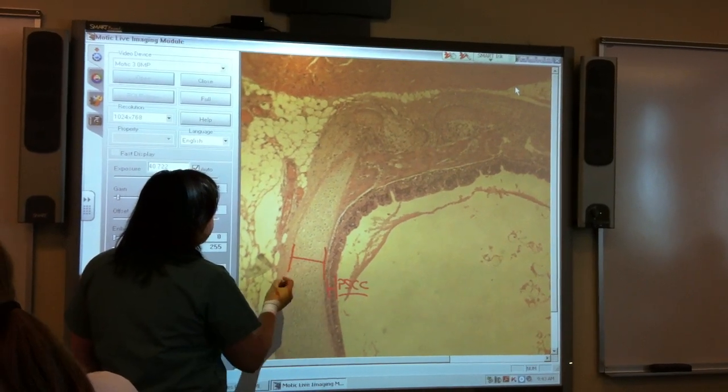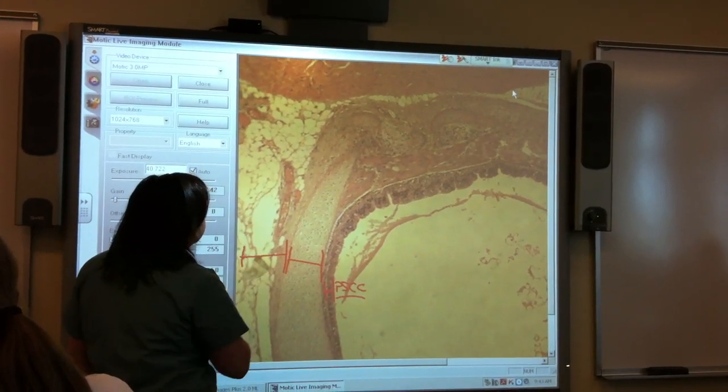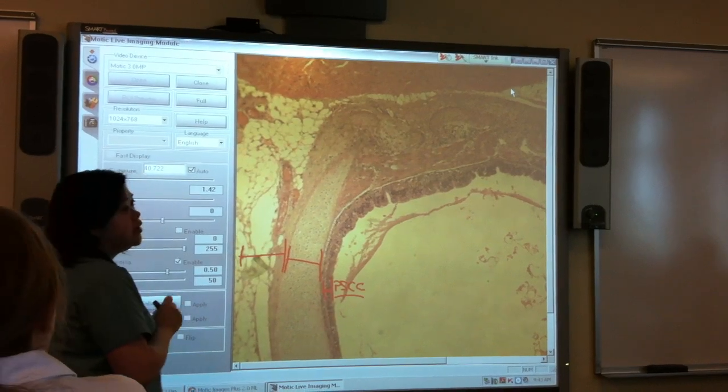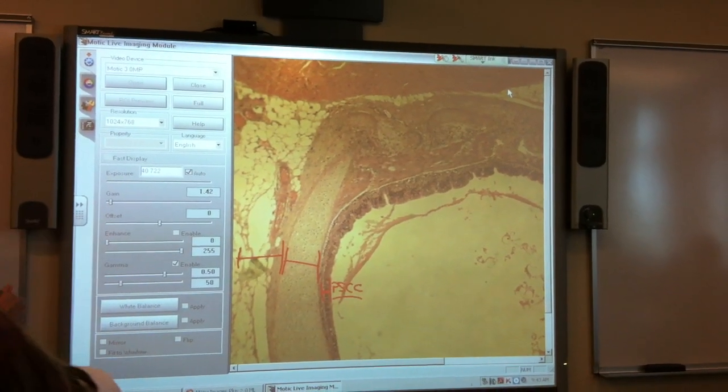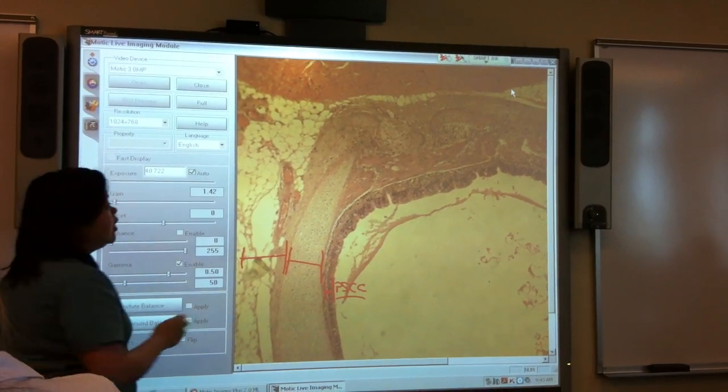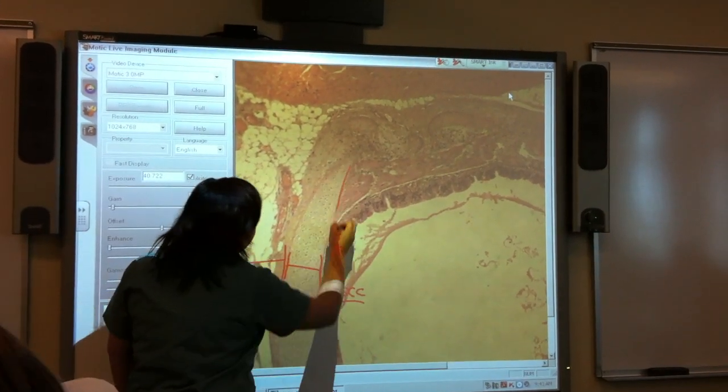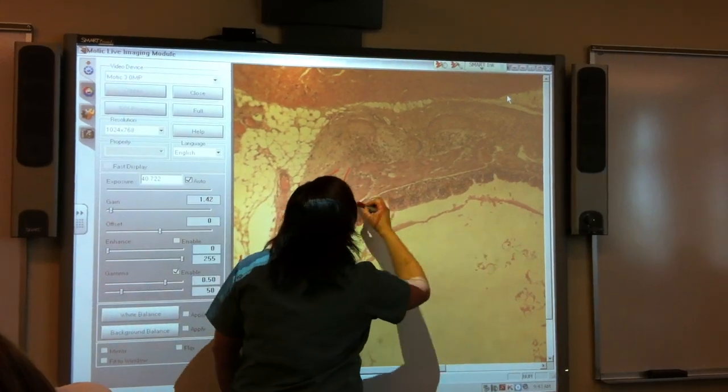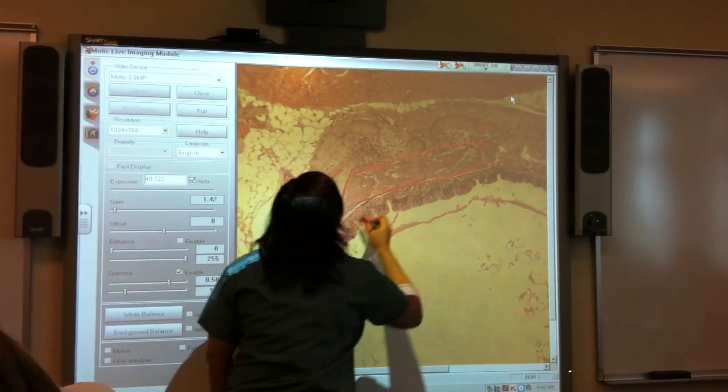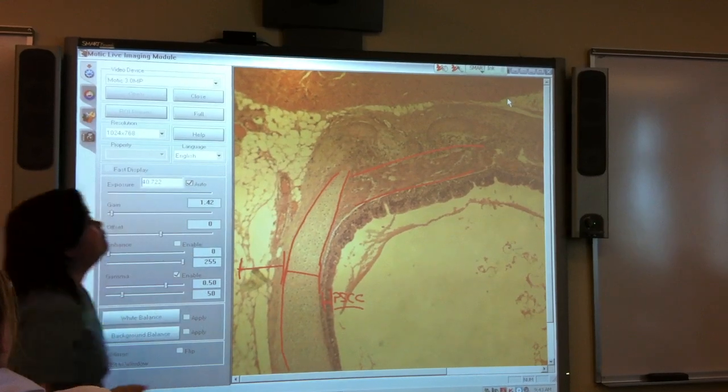This one. Hyaline cartilage. And then this out here. It is adipose, but it's adventitia for layer-wise. Adventitia. The hyaline cartilage, since this trachea is a C ring, so it goes all the way around. And at the back of the ring. Trachealis muscle. Trachealis muscle is right there.